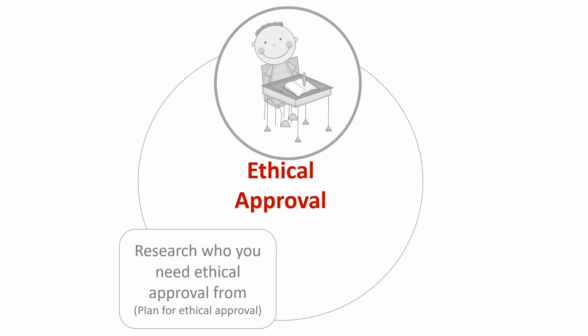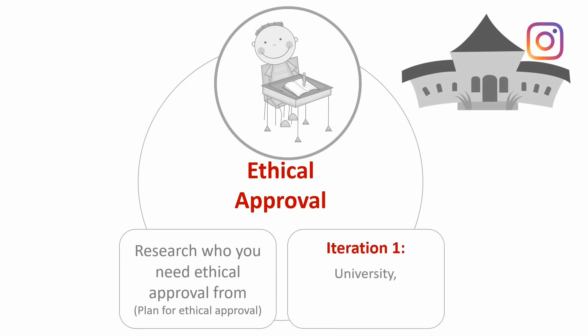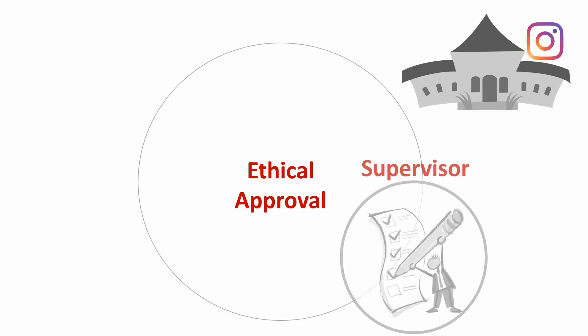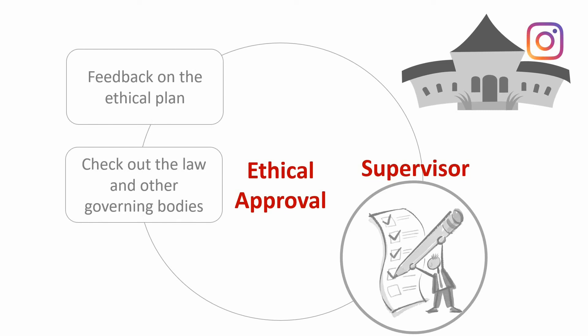So let's say your study is about understanding how often school kids use Instagram for educational purposes. In your first draft, you include that you need ethical approval from the university and from the school board. You send that draft to your supervisor. Your supervisor will then check if your plan for ethical approval is appropriate for your topic and provide you with feedback. At this point, they may make you aware of things you have missed — they may ask you to consider the country's law regarding speaking to minors in an official capacity, and to consider other governing bodies that schools belong to beyond just the school board.